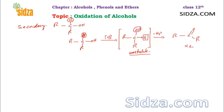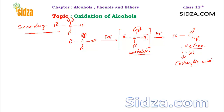From secondary alcohols you get ketones. Ketones can be further oxidized to carboxylic acids using a very strong oxidizing agent, but we will discuss that in a later chapter on aldehydes and ketones. For now, we confine the discussion to the ketone stage.